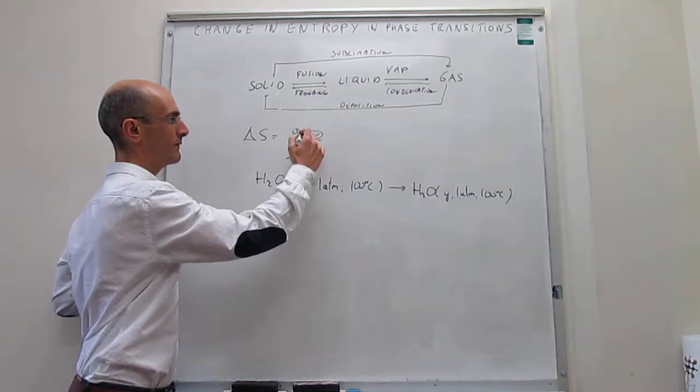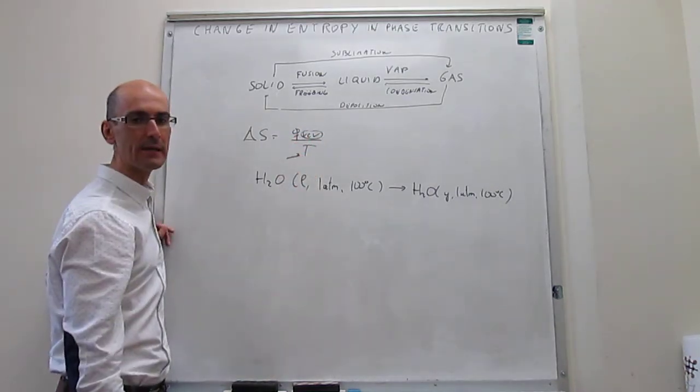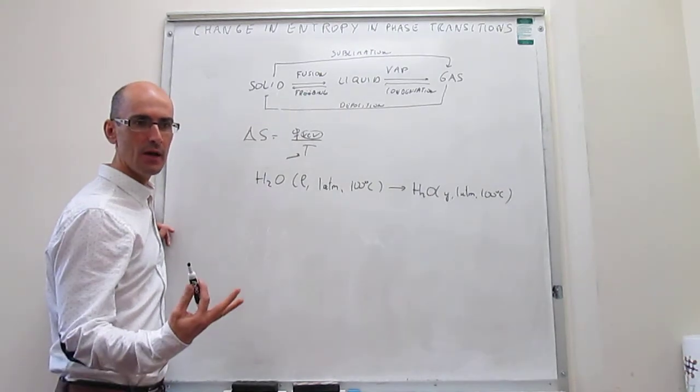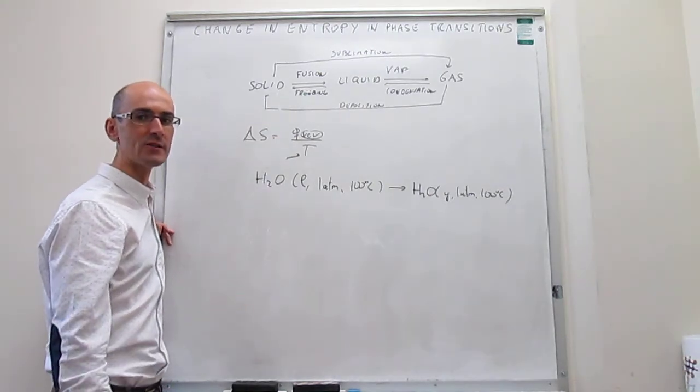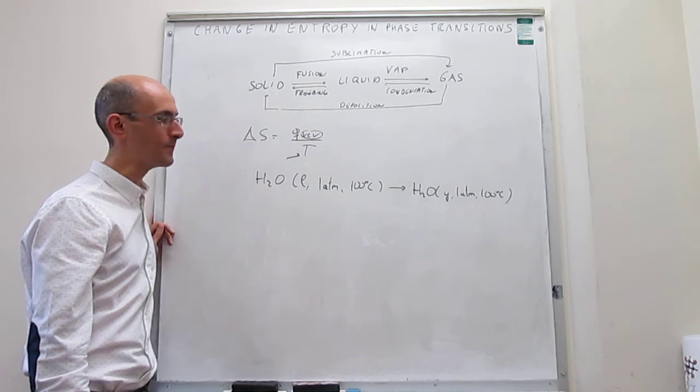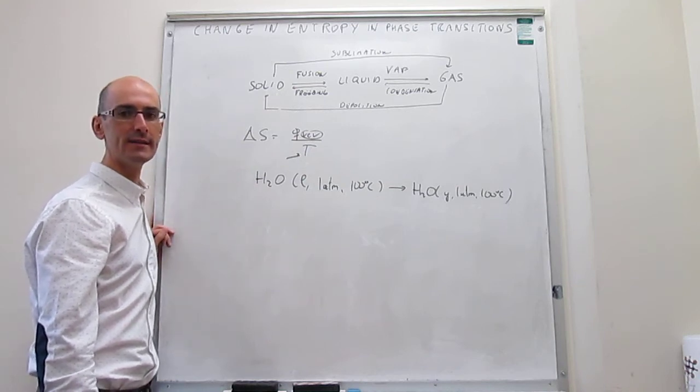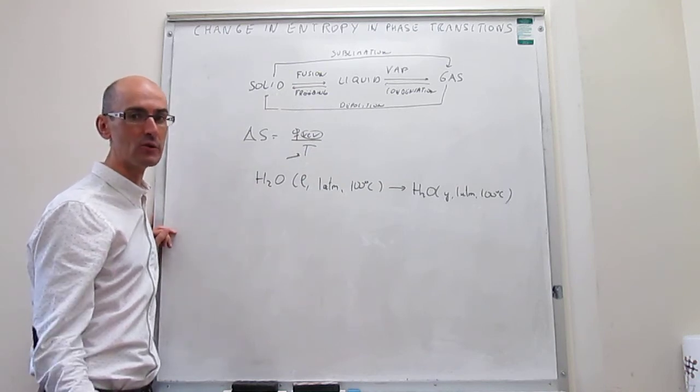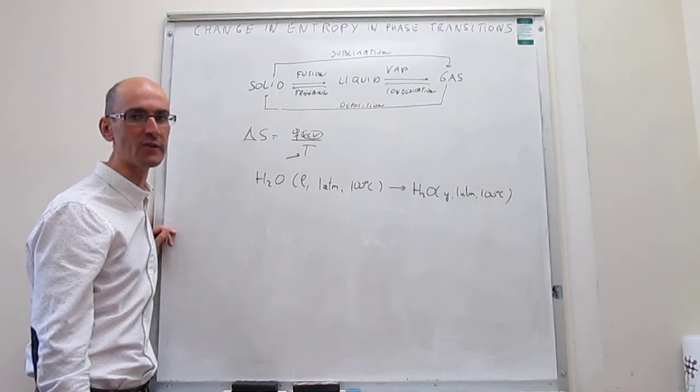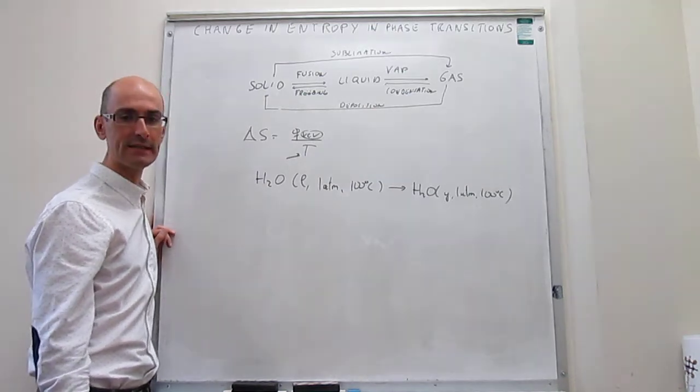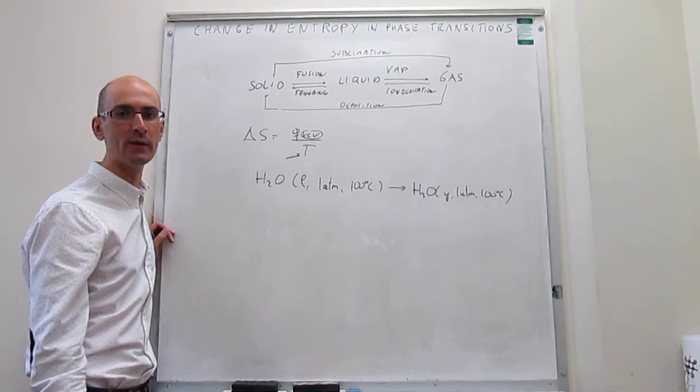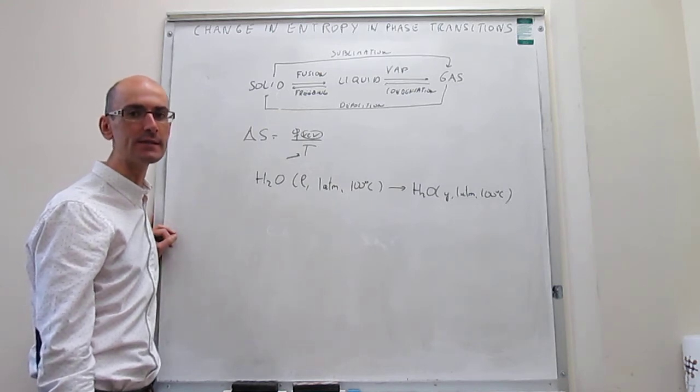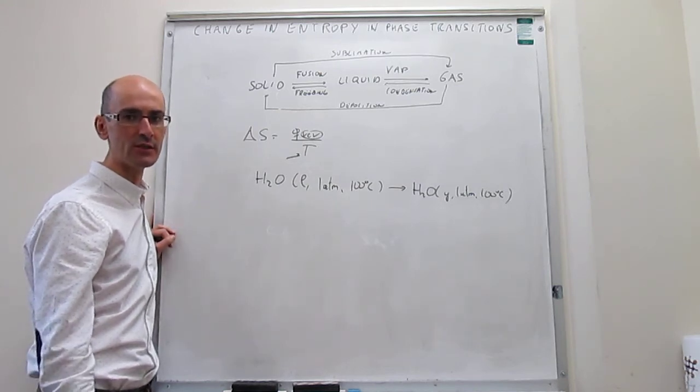First of all, we have to think about what reversible means in a phase transition. Ultimately, reversible processes require equilibrium. A phase transition is a process that takes place at equilibrium. So every phase transition is going to be reversible. What that means is that we don't have to worry about what that reversible substrate is, because every phase transition will be reversible.